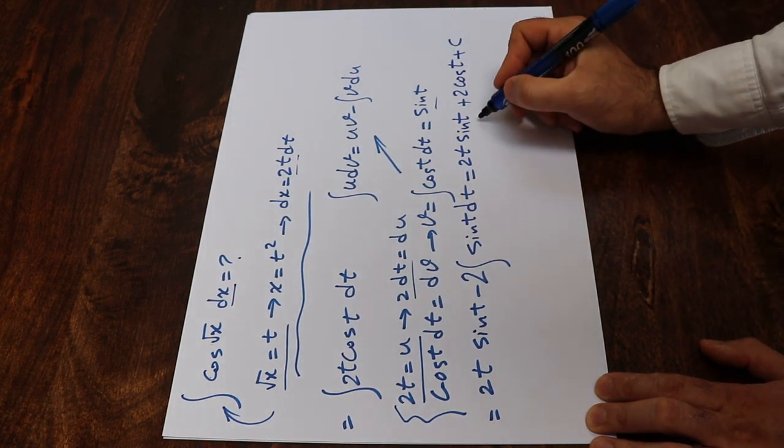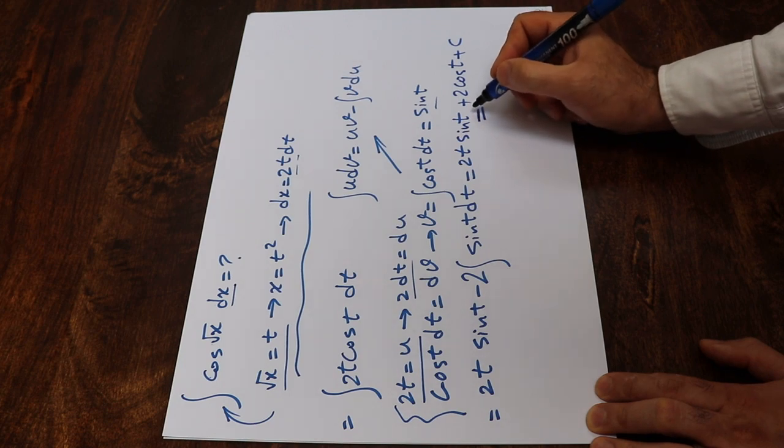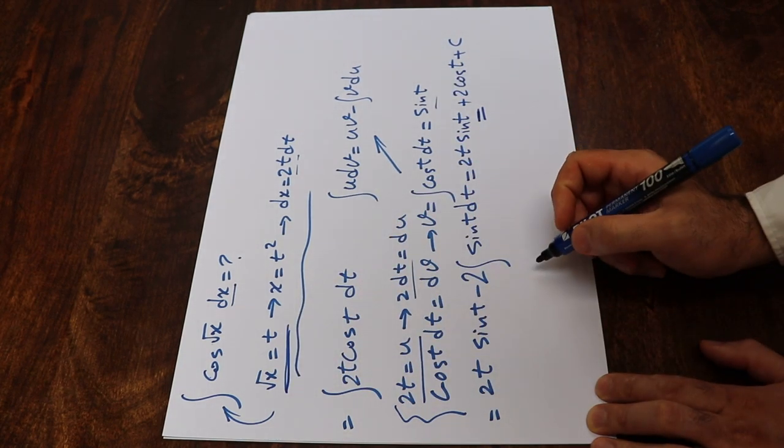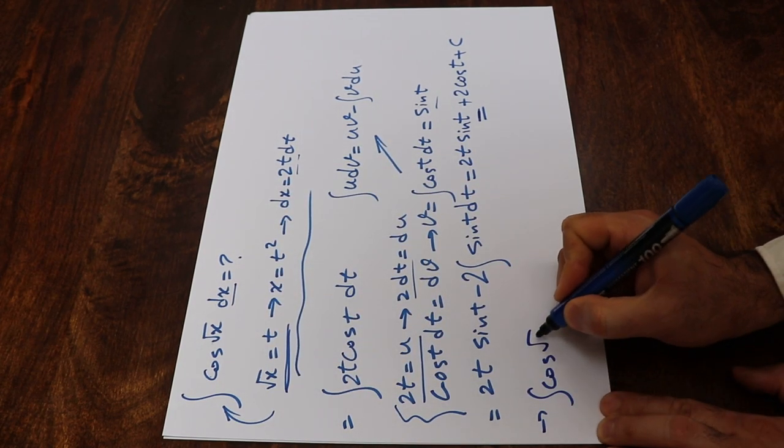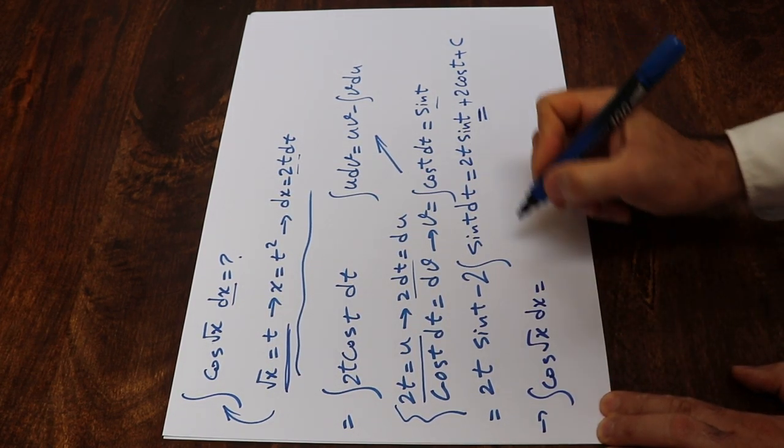So here, all you need to do is to substitute this parameter t with the definition of t, which is square root of x. Therefore, the integral of cosine square root of x dx will be equal to 2,